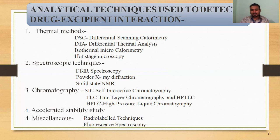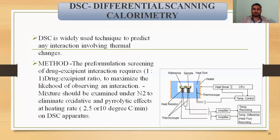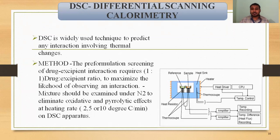DSC — Differential Scanning Calorimetry — is one of the most essential and useful analytical methods for drug-excipient compatibility parameters. It is mainly based on the thermal properties of the excipients or any chemicals. For preformulation screening, the drug-to-excipient ratio should be 1:1. To maximize the likelihood of observing an interaction, mixtures should be examined under N₂ to eliminate oxidative and pyrolytic effects, at a heating rate of 2, 5, or 10°C per minute.